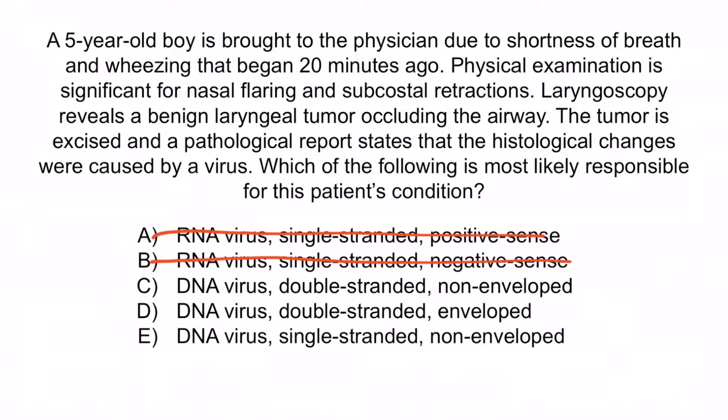D is a reference to most DNA viruses that are double-stranded and enveloped, such as HSV and pox viruses, but these are not associated with laryngeal papillomas. E is a reference to parvovirus, the only DNA virus that is single-stranded, which typically causes a rash on the cheeks and trunk but is not associated with laryngeal papillomas. So again, the correct answer is C — DNA virus, double-stranded, non-enveloped. And with that, we've covered everything you need to know regarding HPV.